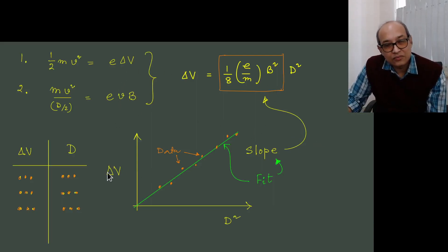So here is the formula again which I mentioned: delta V, you keep changing, measure the d, and then plot the data, fit it with a straight line passing through the origin. The slope will give us the value of E by m provided we know B. What about B?